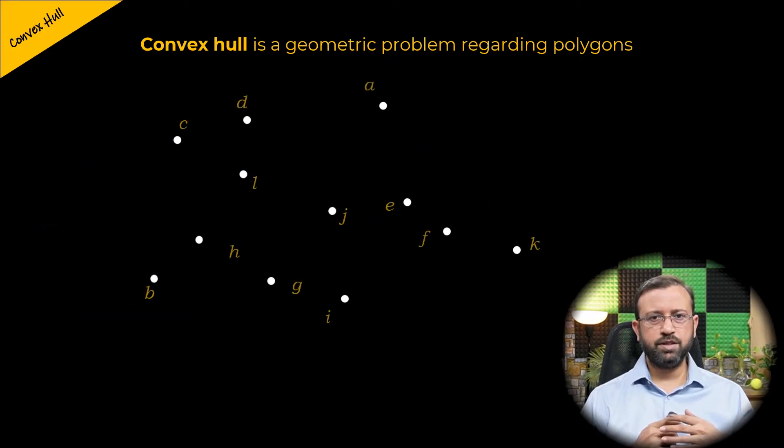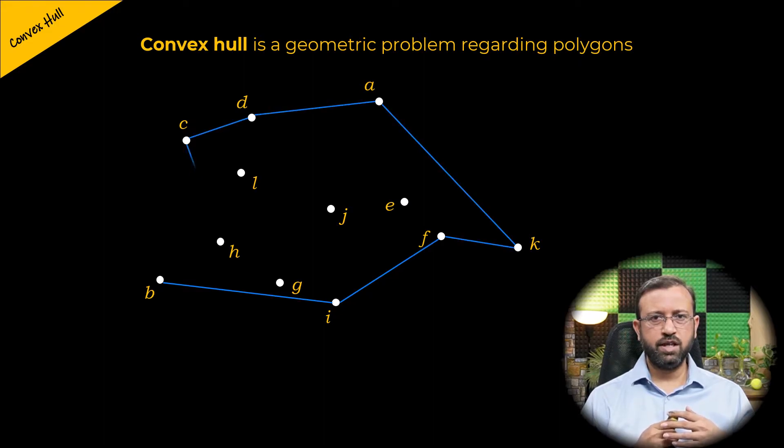Let us consider these 12 points. Joining the points B, I, F, K, A, D, C, H, and B creates a polygon.